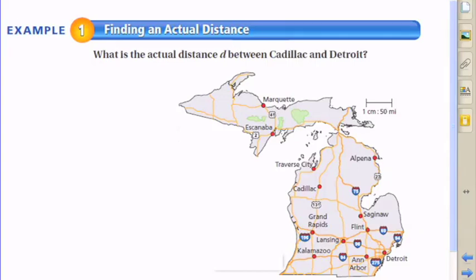We're going to use some of our proportionality skills to find an actual distance between two cities on a map. In this case, between Cadillac, Michigan and Detroit, Michigan. We need to use that little thing I'm circling right there - that's called the scale, which means that one centimeter on the map is equivalent to 50 miles in the actual distance.